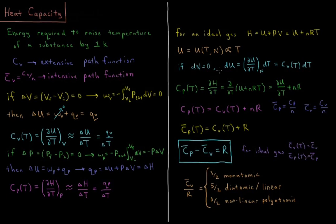In a closed system, the infinitesimal change in internal energy during a small process is the partial derivative of internal energy with respect to temperature, which equals Cv dT. For the constant pressure heat capacity, Cp equals the partial derivative of enthalpy with respect to temperature, which for an ideal gas — where H = U + NRT — gives dU/dT plus NR.